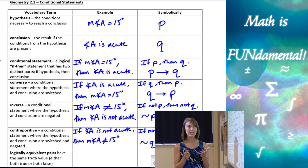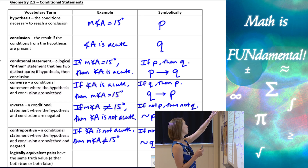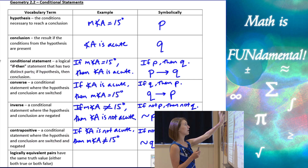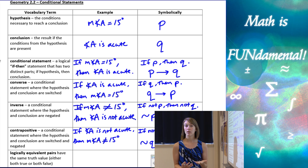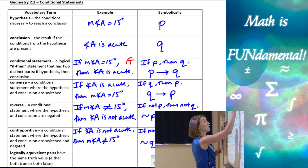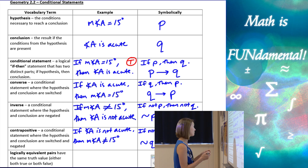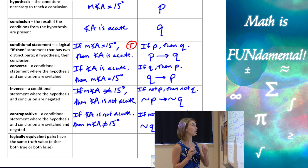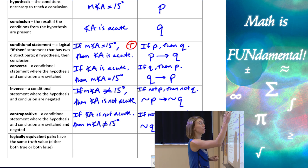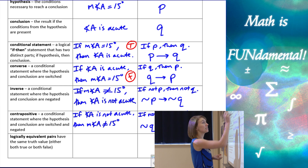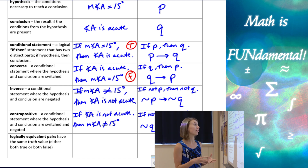Using a red pen, let's mark true and false. The conditional statement — if the measure of angle A is 15 degrees, then angle A is acute — is true, since an acute angle is between 0 and 90 degrees. The converse — if angle A is acute, then the measure of angle A is 15 degrees — is false, because I can find a counterexample: 30 degrees is acute but not 15.